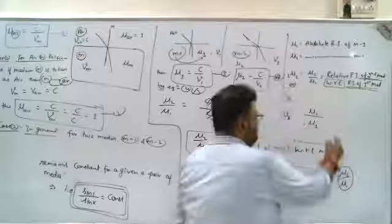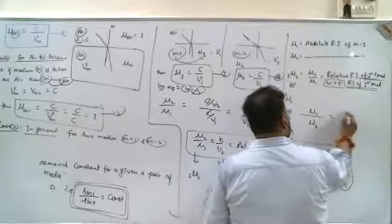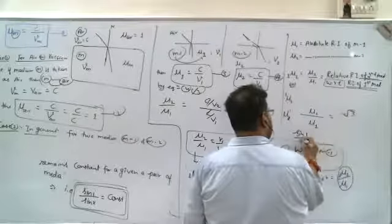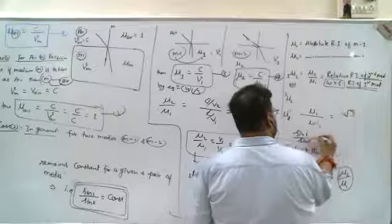So this means, if the answer is mu2 upon mu1 equals root 3, and the sine i upon sine r answer is root 3, this means these two must be together.